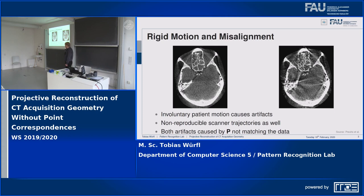This is not only about patient motion — it is also about non-reproducible scanner trajectories. If your scanner, which you calibrate, is not able to use the same trajectory again, you get the same problems. Both artifacts are, in the end, caused by your projection matrix not matching your projection data.